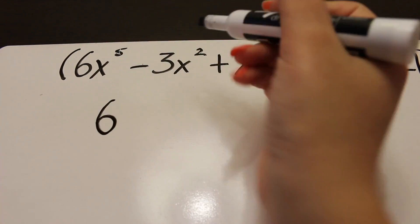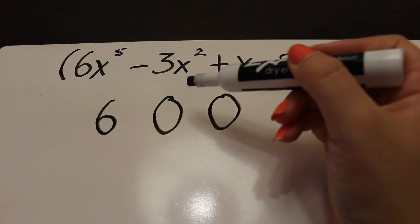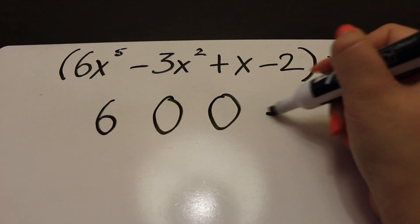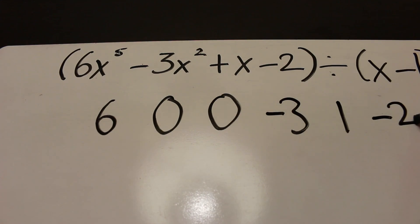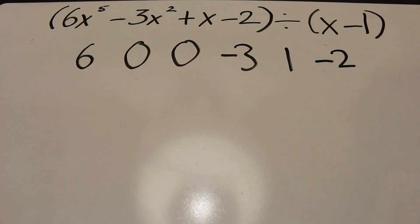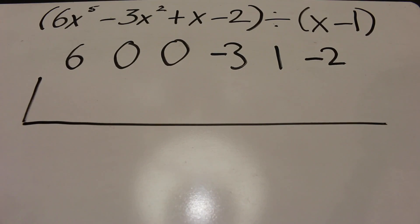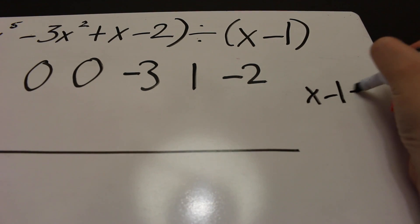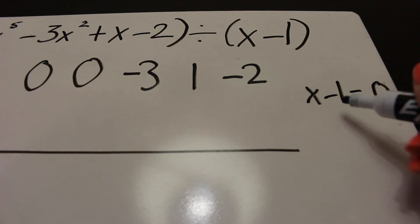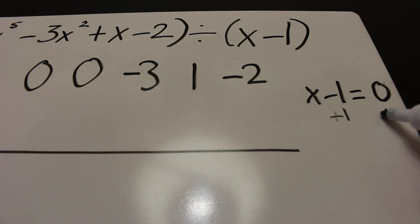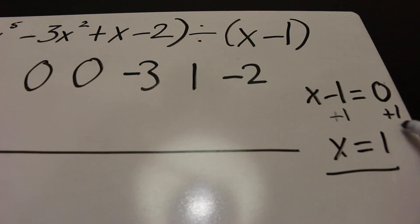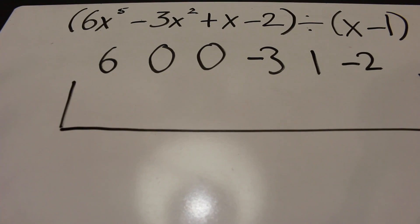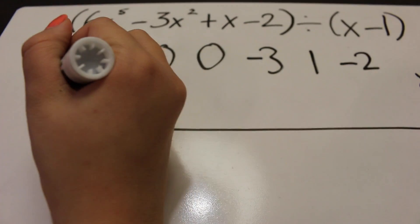Write down the coefficients: 6, 0, 0 for the missing powers 4 and 3, then negative 3, 1, and negative 2. Create two lines. Look at the divisor x minus 1, set it equal to 0, add 1 on both sides — so x is 1. Put 1 on the outside.